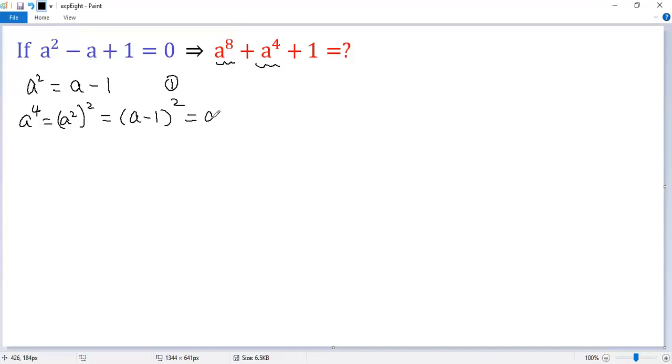For the right side, A squared minus 2A plus 1. Now from equation 1, we replace A squared by A minus 1.